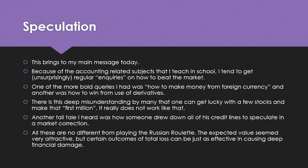Another very troubling case I heard was how someone drew down all his credit lines to speculate in a market correction. I also heard of another one where someone took a contra position and tried to short a certain index, and ended up losing lots of money because the market went the other way. The problem with many of these events is that people don't understand that you can't just look at expected values and expect that the average would be the case over the long term. You just need one bad day — one bad decision — to wipe you out.